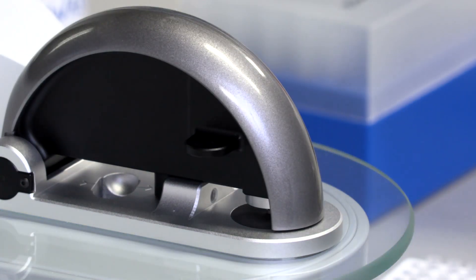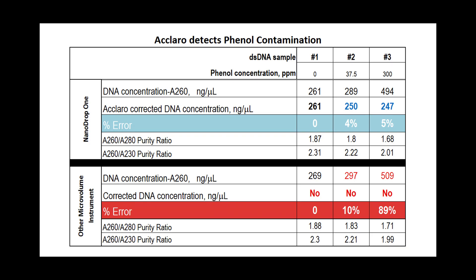When comparing data from a NanoDrop One instrument to a competitor spectrophotometer, you see the Acclaro software provides you with accurate nucleic acid concentrations even when phenol is present in your sample. The competitor instrument cannot correct for the presence of phenol and provides you with an overestimate of nucleic acid content.